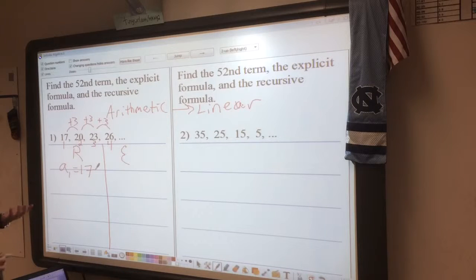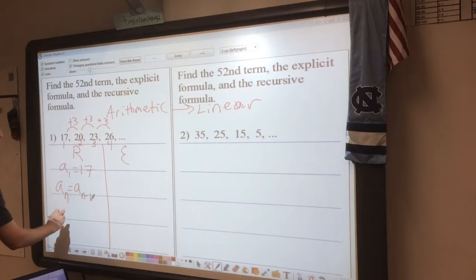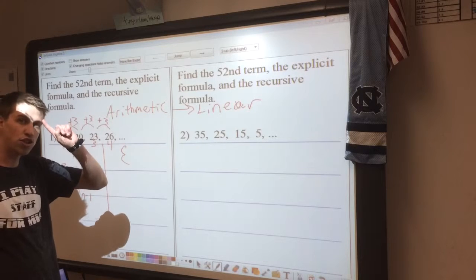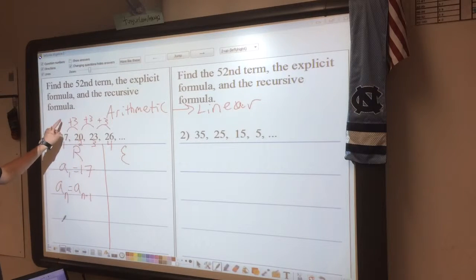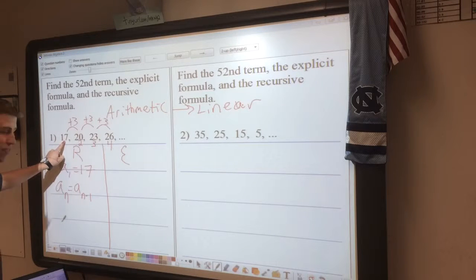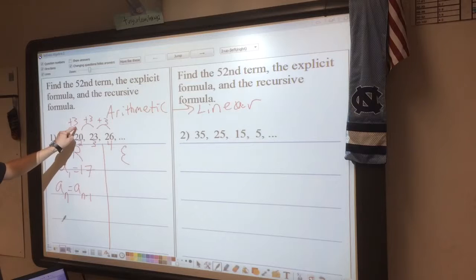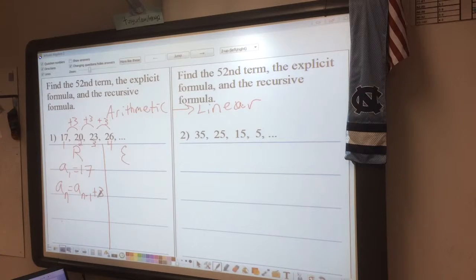And then the actual recursive formula is always A sub n is equal to A sub n minus 1, and that's just talking about the previous term. So your thinking should be, if you're at 20 and you go back to the previous term, what did you have to do to get to 20? And we already saw we had to add 3. So my recursive formula will be plus 3, because I went to the previous term and I added 3.